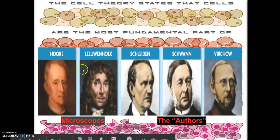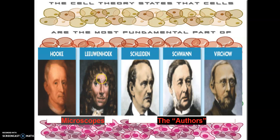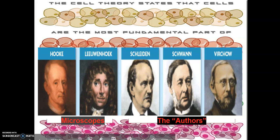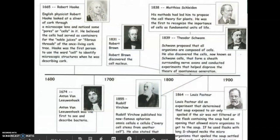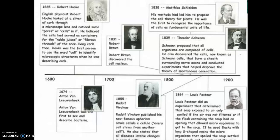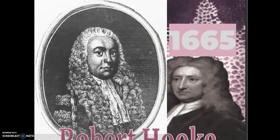We have here our two contributors to the cell theory. Both of those contributed to this by their work with microscopes. We have Robert Hooke and then Anton van Leeuwenhoek, the Dutchman. And then the authors, or what are considered the authors of the three-part cell theory, we have Schleiden, Schwann, and Virchow. At the end of your notes, we'll put together a little timeline so we can see where everybody came in terms of time — when in the world did they do their work.